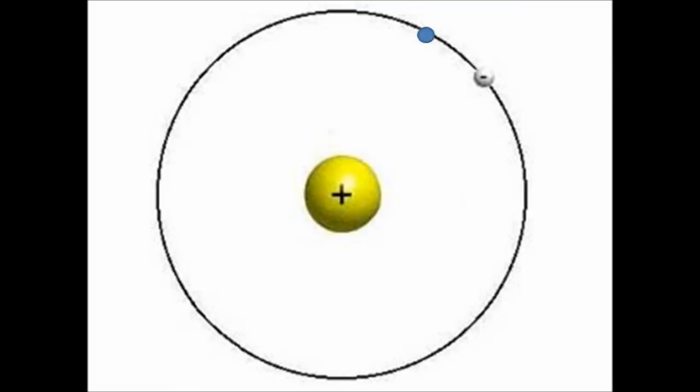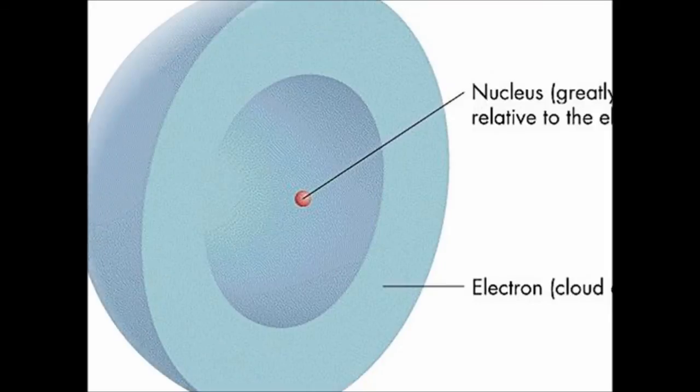The simplest atom is hydrogen. It has one proton in the nucleus and one electron orbiting it at a very high speed, in actual fact forming a cloud surrounding the proton in the nucleus.